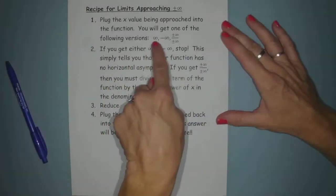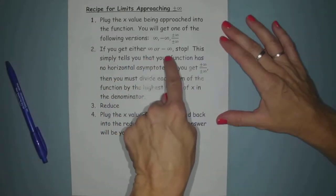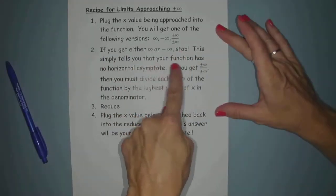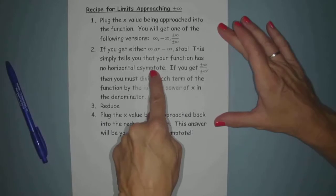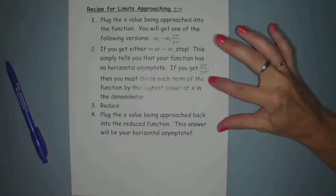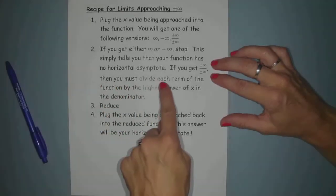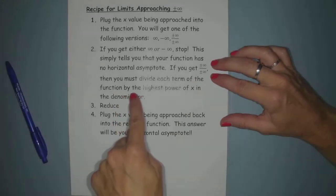If you get either of these first two, infinity or negative infinity, just stop. This simply tells you that your function has no horizontal asymptote. But if you get the undefined infinity over infinity, then you must divide each term of the function by the highest power of x in the denominator.